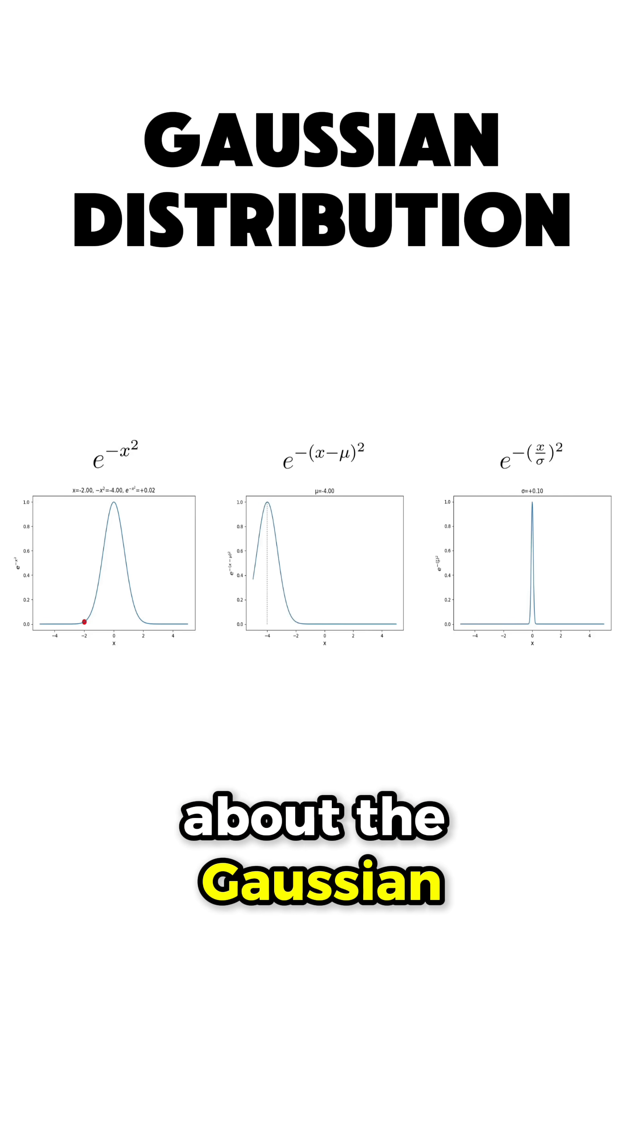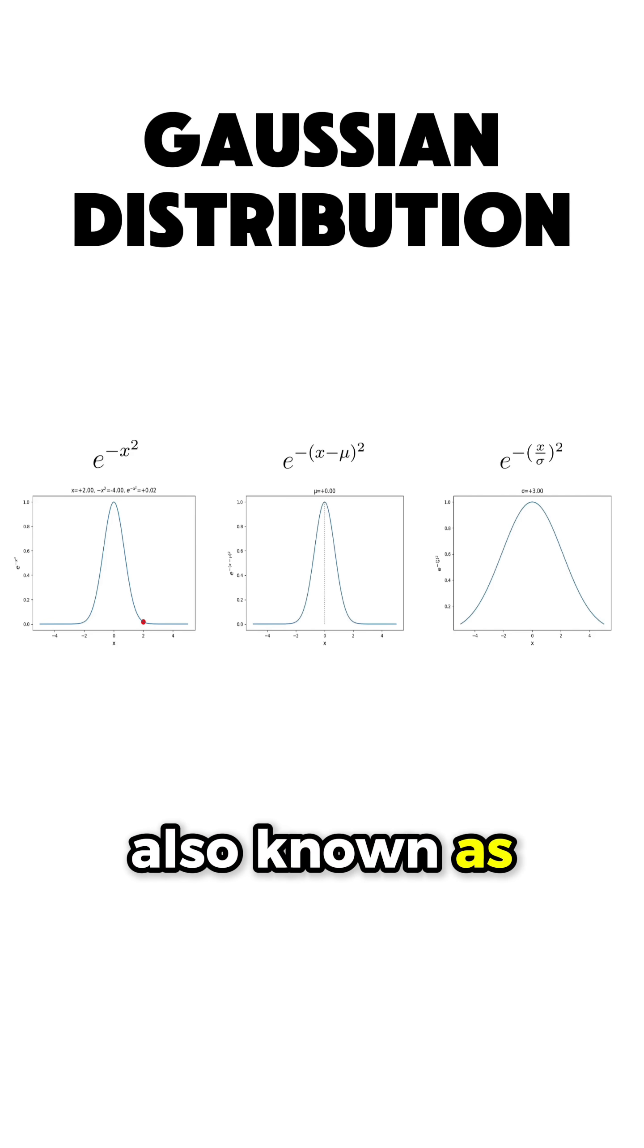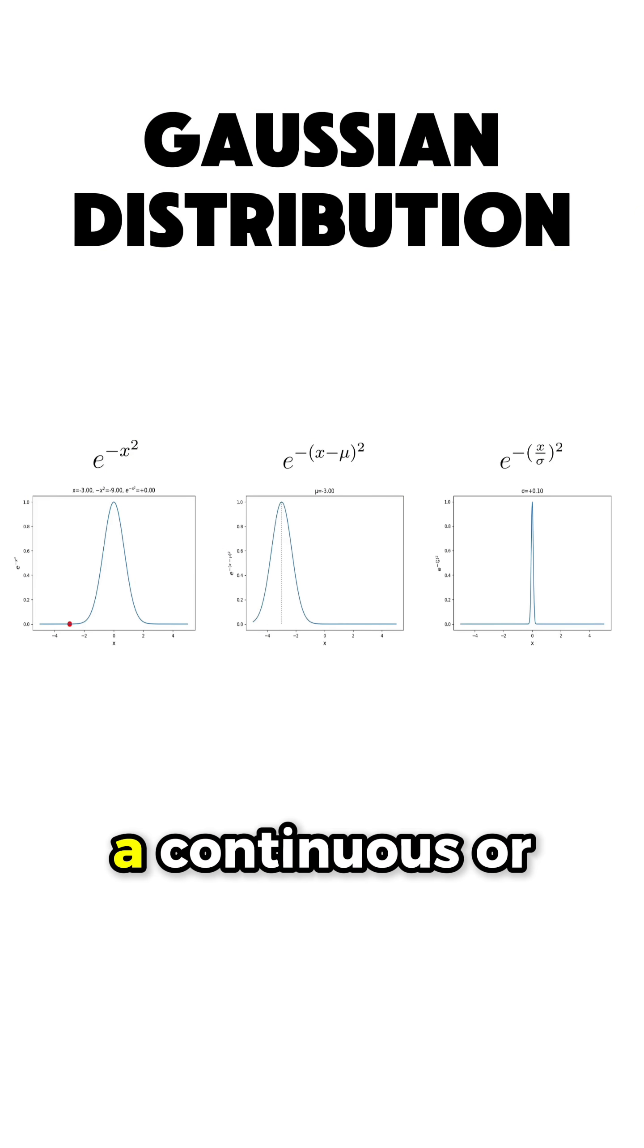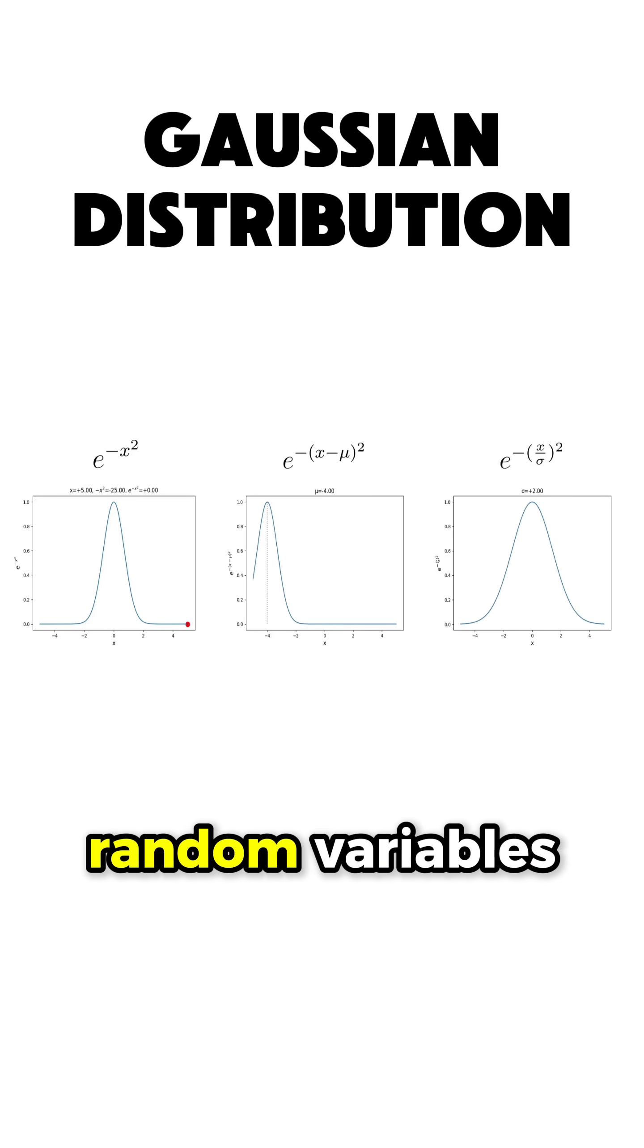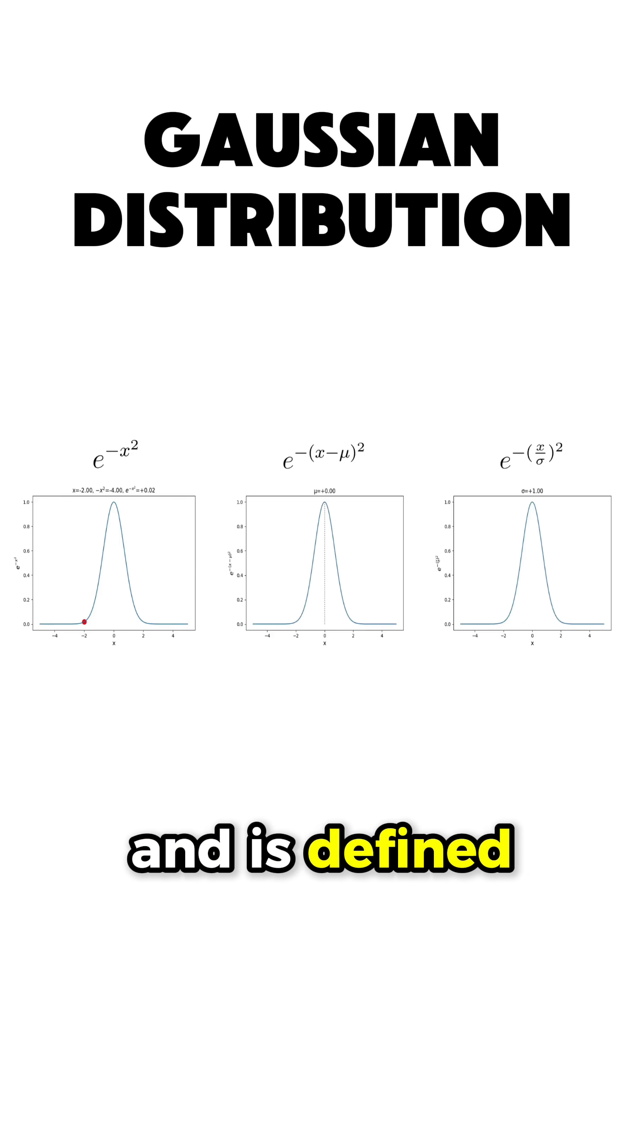Now, let's talk about the Gaussian distribution, also known as the normal distribution. Basically, it is a continuous or discrete probability distribution that is commonly used to model random variables, and is defined by two parameters.